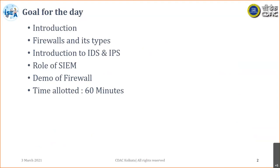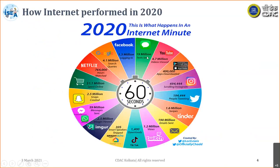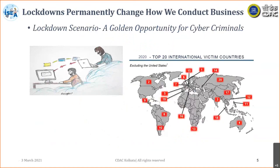So what do you think — how did the internet perform in 2020? In a single minute, on average, 1.3 million Facebook logins were done, 4.1 million Google searches were done, around 7.64 lakh hours of videos were watched, and around 4.7 million videos were uploaded. So much activity is going on.